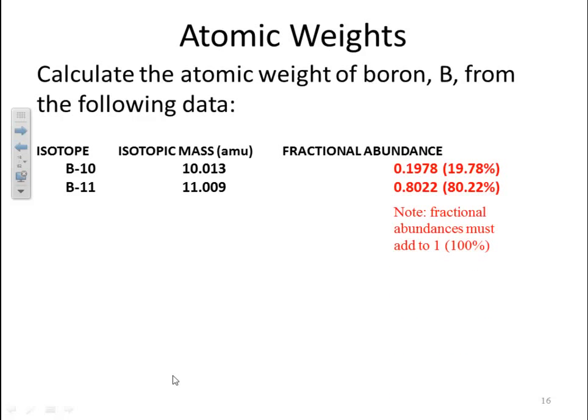Note that the fractional abundances must add up to 1 or 100%. 1 if you're talking about decimal, percent if you're talking about percentages. This means you may run into problems where I give you 1 of the two species, or maybe I give you 3 and give you 2. Well, you know you need to add up to 100 so you can subtract the other two or the other one from 100 and figure out what the unknown isotope fractional abundance is.